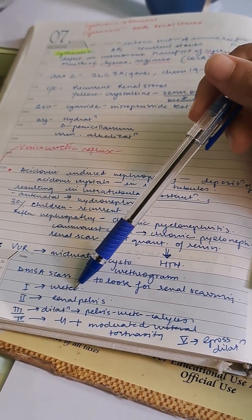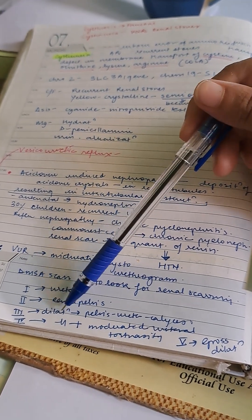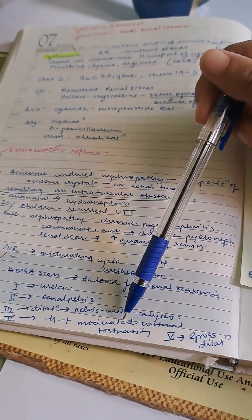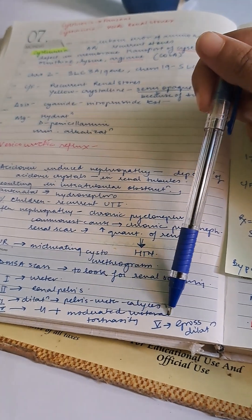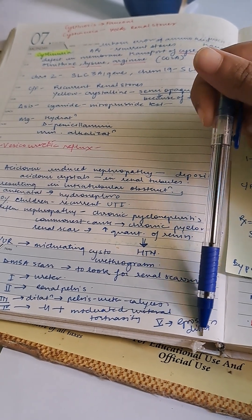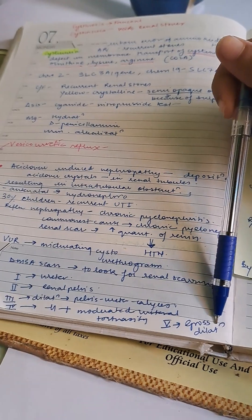There are five types of vesicoureteric reflux grading: Grade 1 is scarring in the ureter, Grade 2 is scarring in the renal pelvis, Grade 3 is dilatation of pelvic urethral calyces, Grade 4 is moderate ureteral tortuosity, and Grade 5 is gross dilatation of the whole pelvicalyceal and ureteral system.